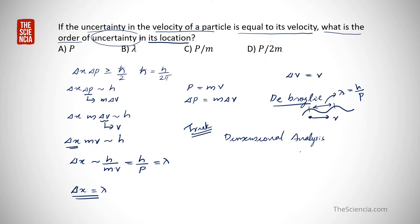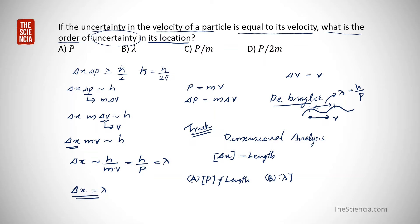Using dimensional analysis: we need to find delta x, whose dimension is length. Checking the first option, p — the dimension of p is not length, so that is not correct. The second option is lambda, which is wavelength, so its dimension is length. That is the correct answer. Option c is p divided by m, which equals v, whose dimension is not length.